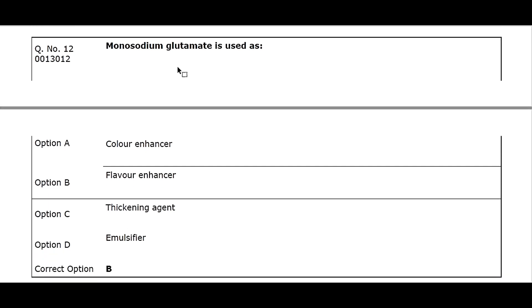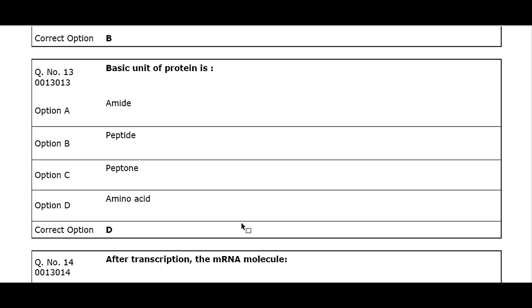Q12. Monosodium glutamate is used as: Option A. Color enhancer. Option B. Flavor enhancer. Option C. Thickening agent. Option D. Emulsifier. Correct option B.